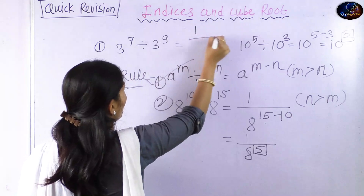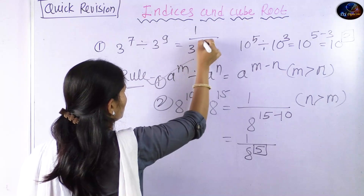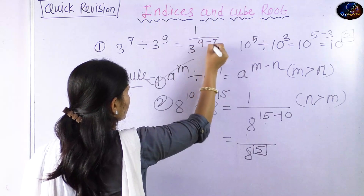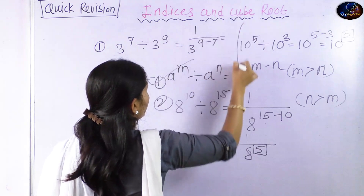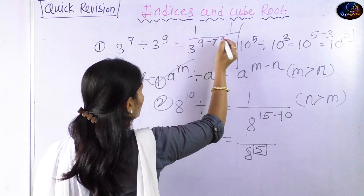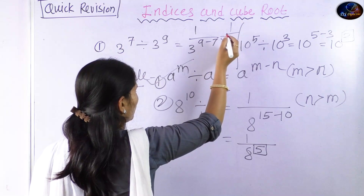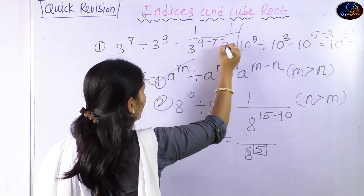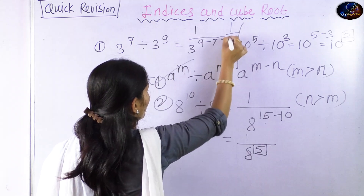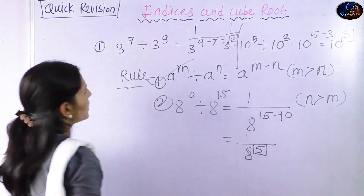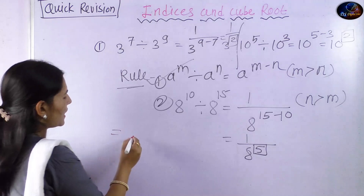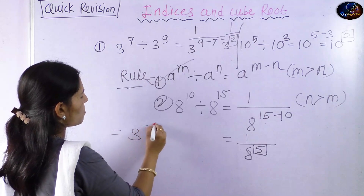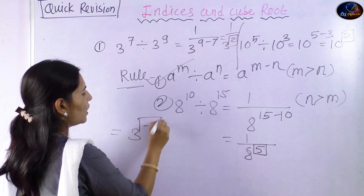Another example: 1 upon 3 raised to 9 minus 7. What is this? That is 3 raised to 2. Wait — actually this equals 3 raised to minus 2, so the answer is 1 upon 3 raised to 2.